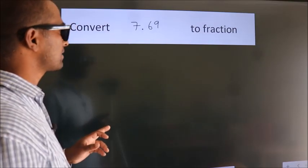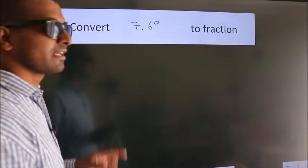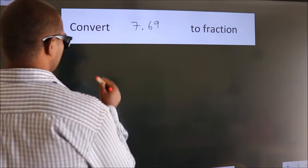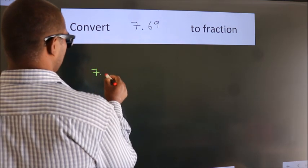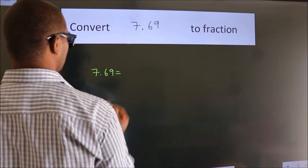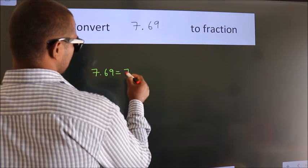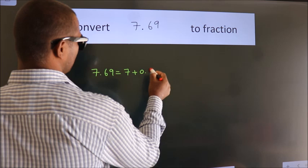Convert 7.69 to fraction. How do we convert this? Given is 7.69. First we should break this into 7 plus 0.69.